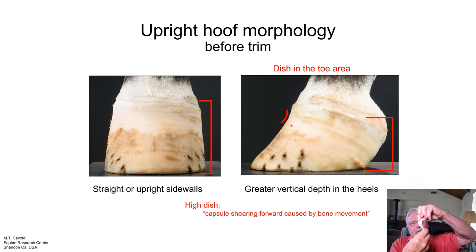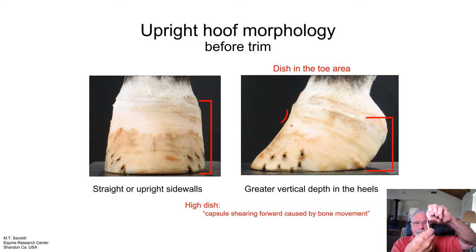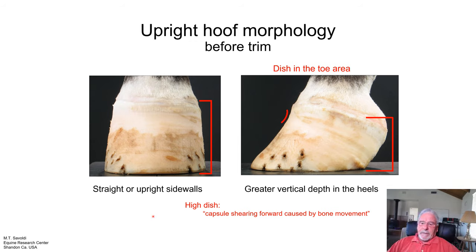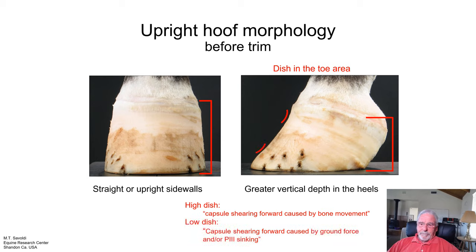This foot can also develop a little dish developing down in the toe area. In this area we can usually see two forces that cause this. One is the capsule shearing. When the foot comes back, it has to push off the toe, and if the toe length of wall is long, it can pick up leverage and pull that dish out in that direction.